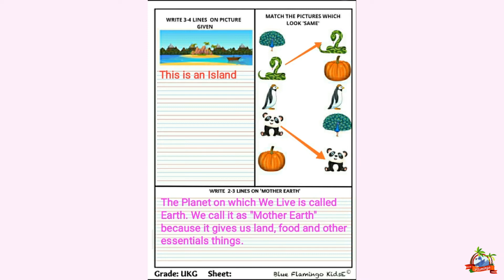Write that it is an island, and there is a boat in the water, and there are so many mountains behind the island. You will write in proper lines. We will write with the use of proper nouns — collective noun, common noun, proper noun. You will use proper nouns.